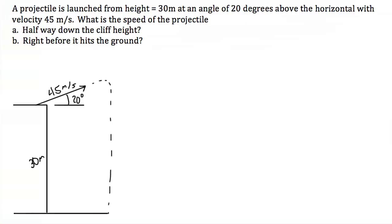What we want is the speed — at a point halfway down the cliff, and then right before it lands. Now speed is like velocity, but velocity is a vector so it has a direction, while speed does not. To find the speed, we're going to find the velocity vectors at these two points and then find the magnitudes of those velocity vectors.